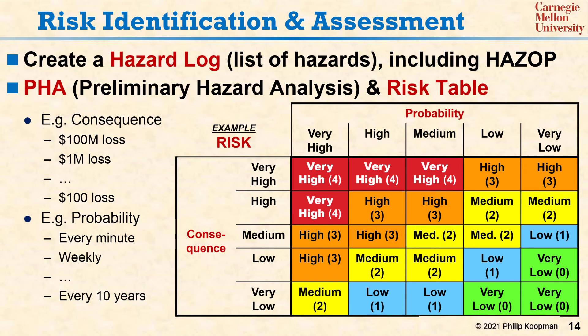For each hazard, you determine consequence and probability, which gives you a square inside the grid. The square tells you the risk, which can range from the very low green squares to the very high red squares. Generally, you need to mitigate all the very high risks at least, usually the high risks and so on. By the time you get to the very low risks, probably you can simply accept them because they're very rare events that basically have very little impact.